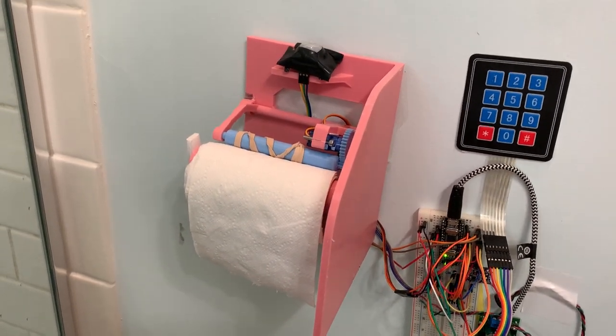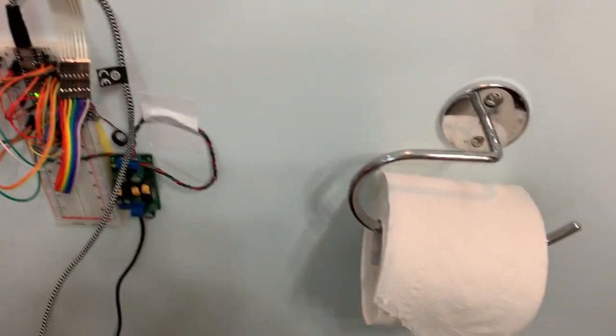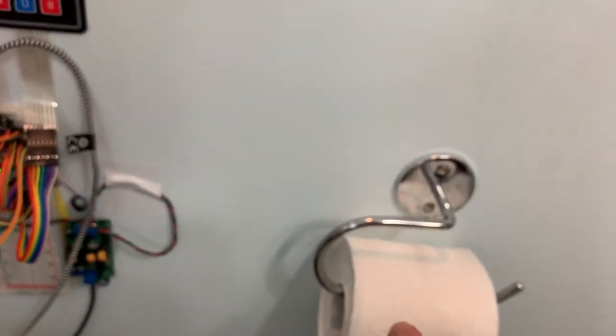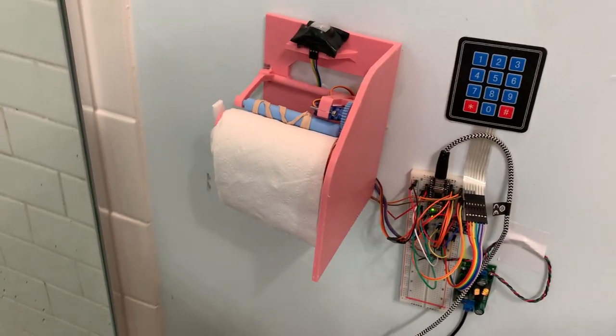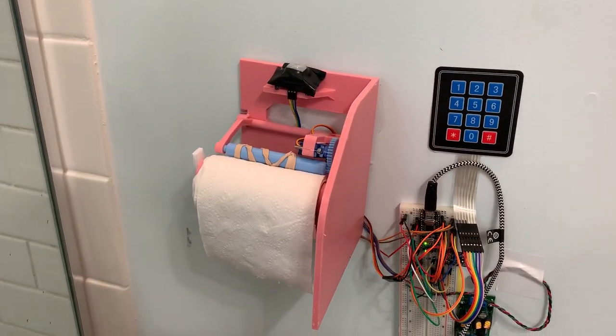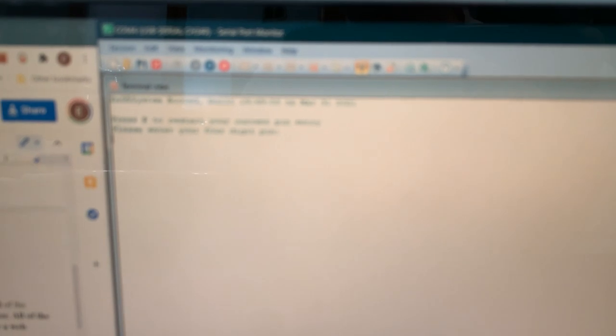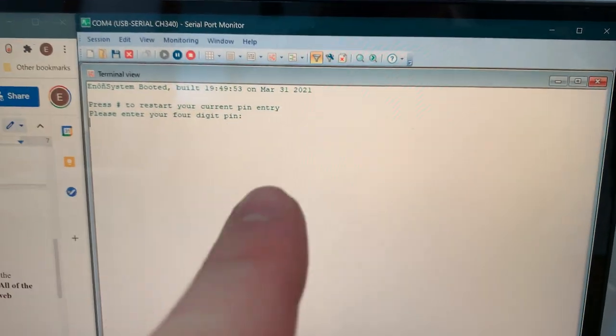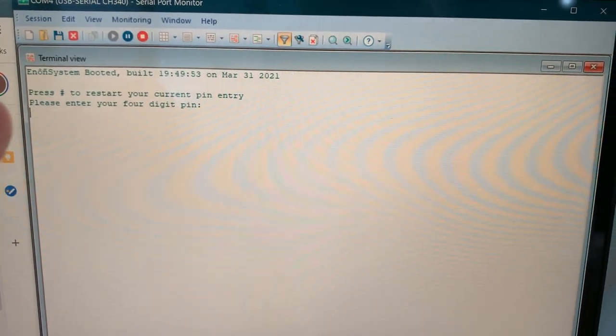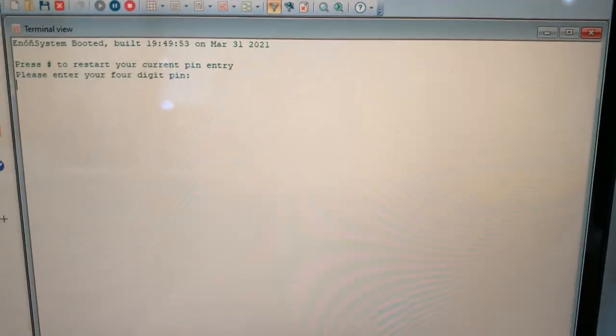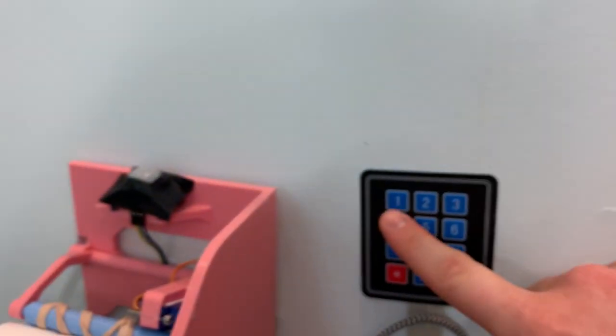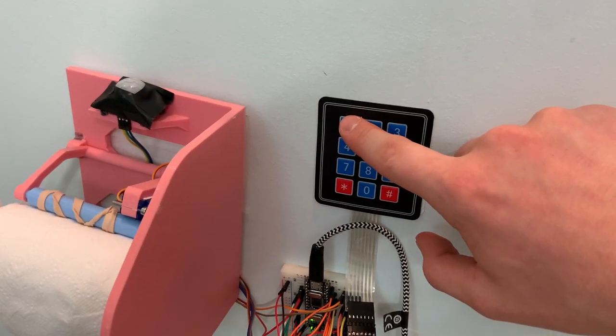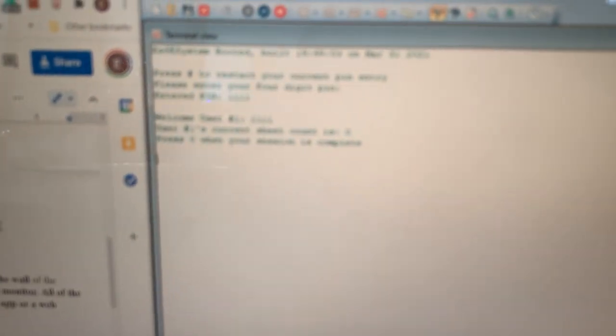Our test conditions are in this lovely bathroom. It's a great environment. It's mounted on the wall right beside the toilet. Ideally this would be off the wall, but this isn't complete yet, so obviously I'm not going to take it down. Let's get started. So let's start by going through the user functions. The serial monitor outputs this to the screen. The number key restarts or resets your current PIN entry, and then you press your four-digit PIN on the keypad. So let's go to user one, which is 1111. Welcome user one, your current sheet count is zero.